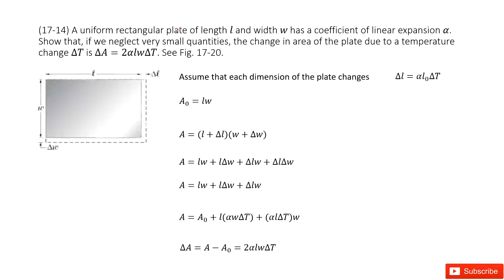We have a uniform rectangular plane with side lengths L and W. We are also told the coefficient of linear expansion is alpha. We need to find the function for the change of the area with the change of temperature, delta A.